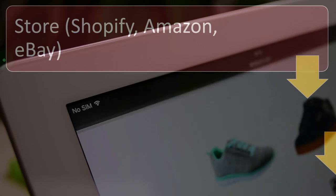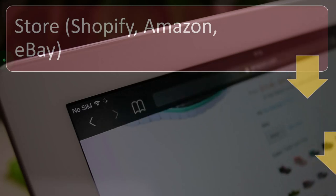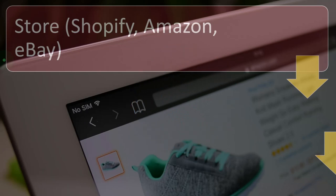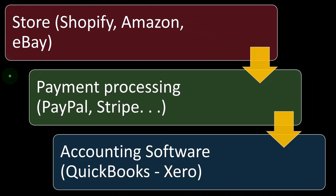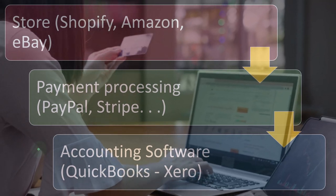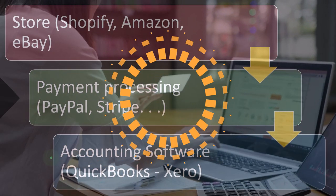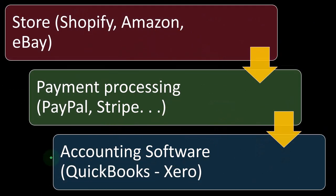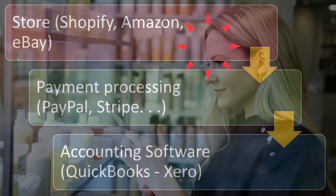Shopify tracks inventory by quantity, not by cost on a FIFO or LIFO basis, because the goal is to facilitate orders — making sure you have what's needed to fulfill the logistical needs. Then you might have an intermediary like a payment processor such as PayPal or Stripe, and then you have QuickBooks or a similar system like Xero. The issue is how to get this information into the accounting software, since all the sales records exist on the Shopify or Amazon side.